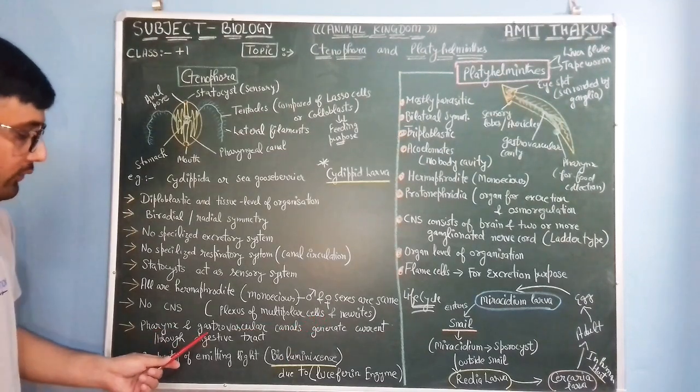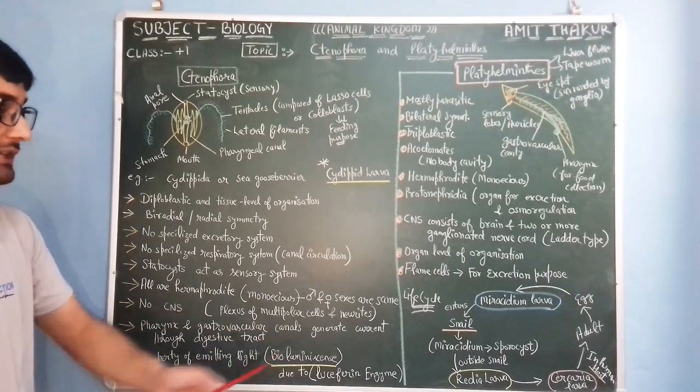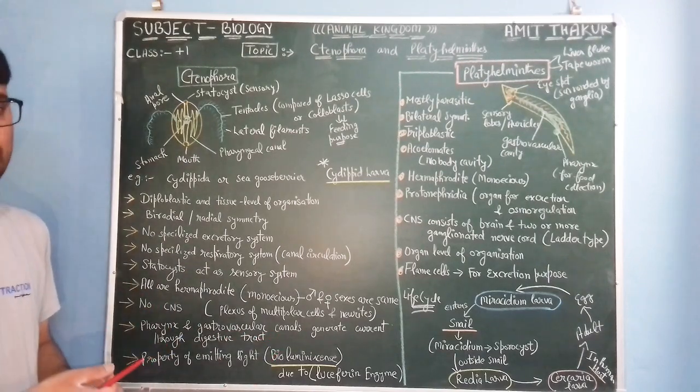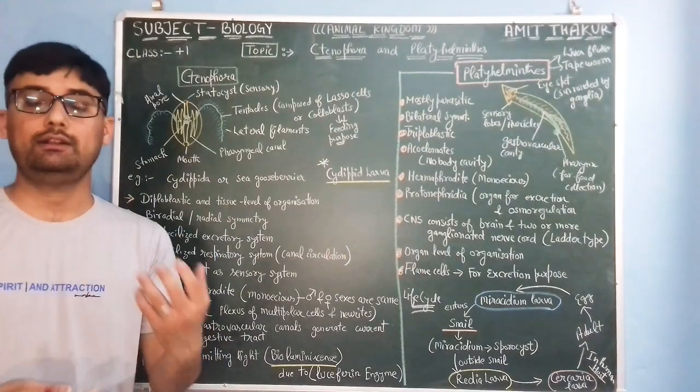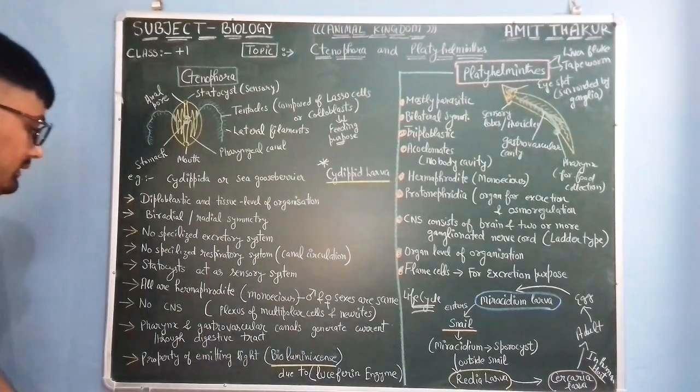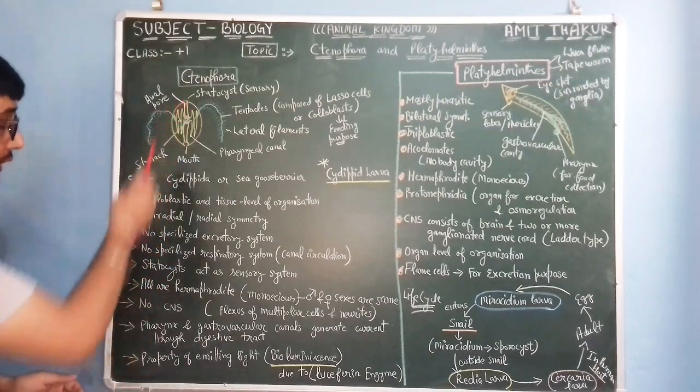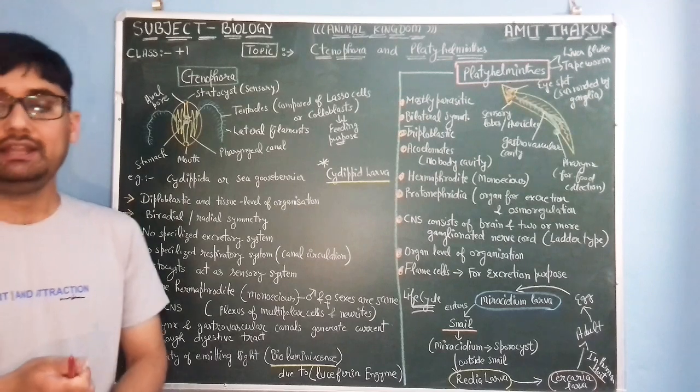Pharynx and gastrovascular canals, they generate current through digestive tract to capture the food particles and to exchange gases.